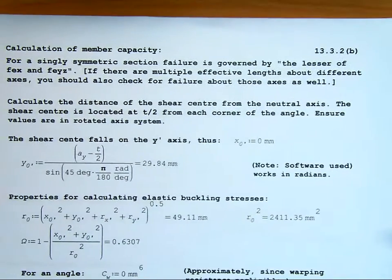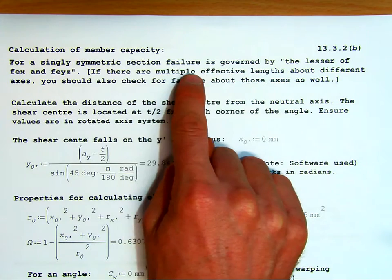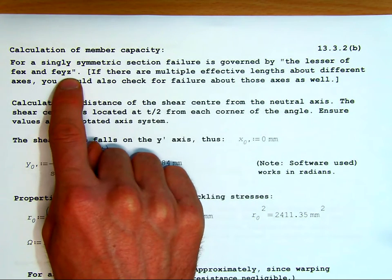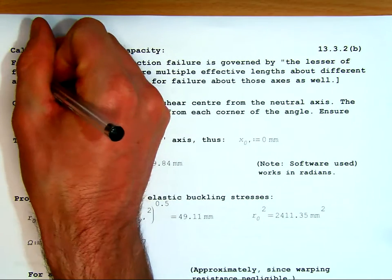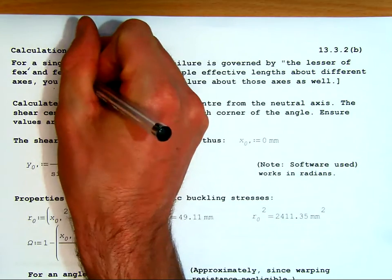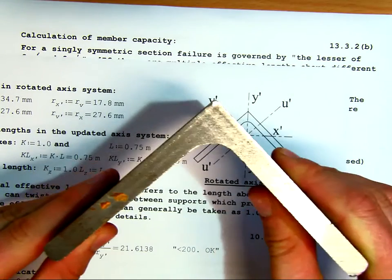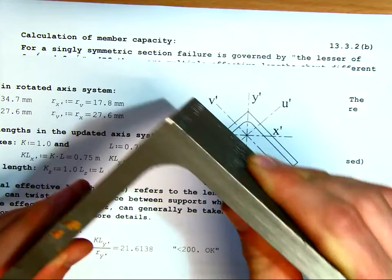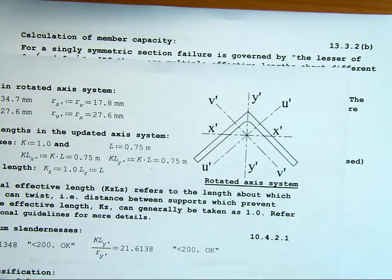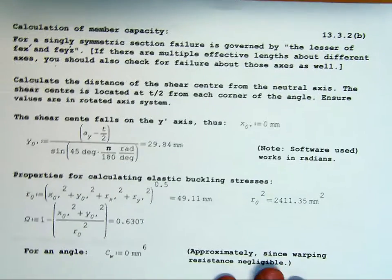So we're now going to start on the calculations for the section. Firstly, calculation of member capacity. For a singly symmetric section, failure is governed by the lesser of f_ex and f_ey'z. We are now working with f_ex' and f_ey'z. So either it's going to buckle outwards, so we're going to load and load, and it'll buck forward, or it's a YZ, which is a twisting failure. We're looking then for a lateral torsional buckle.